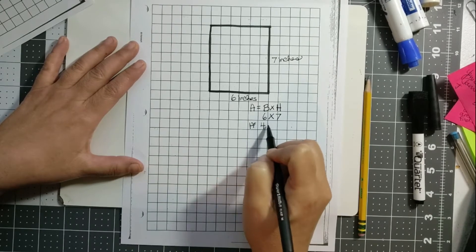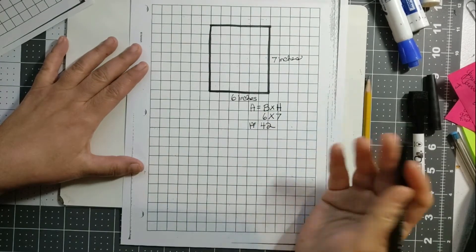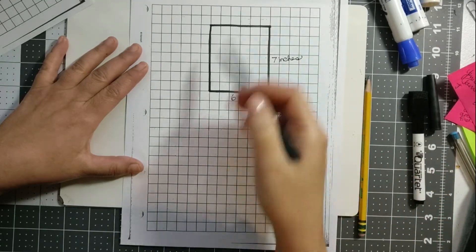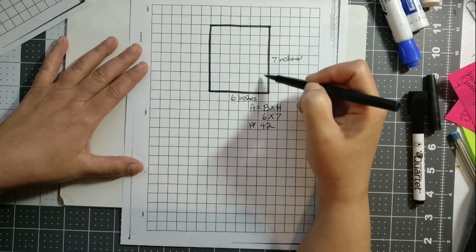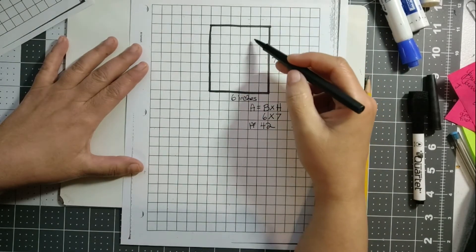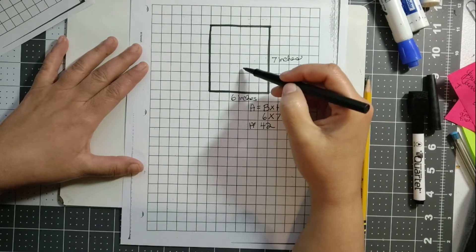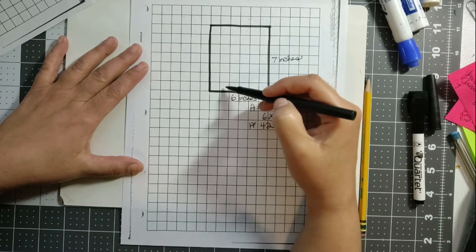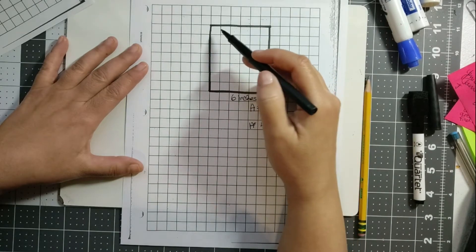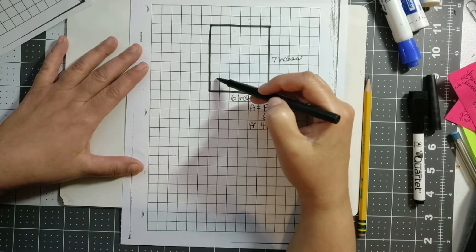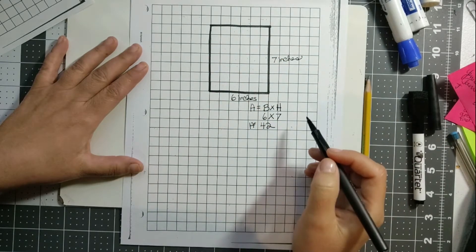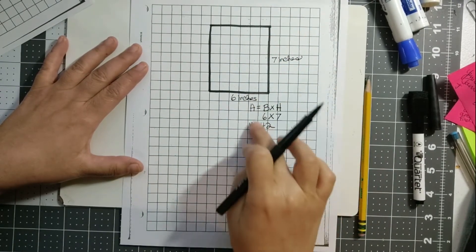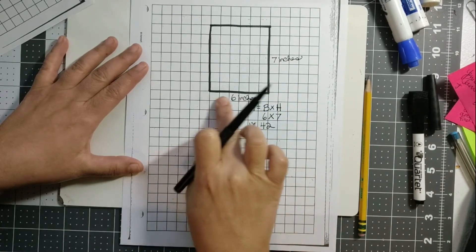Now to double check if you want, you can just count all the squares: one, two, three, four, five... [continuing to count] ...forty-one, forty-two. Okay, but you really shouldn't have to count them if you do this simple multiplying—the base times the height.